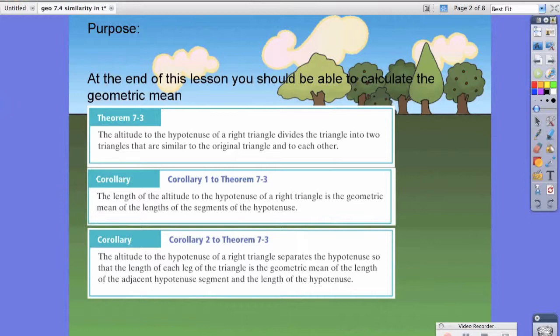Corollary 1 to 7.3 states that the length of the altitude to the hypotenuse of a right triangle is the geometric mean of the length of the segments of the hypotenuse. Again, we'll get to that, but I want to make sure you guys see the technical definition for all these things.